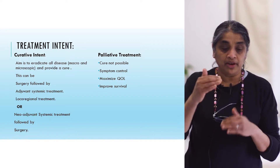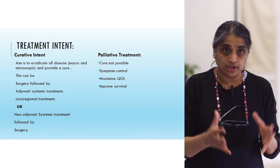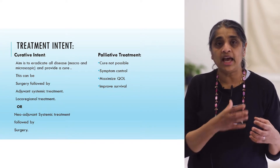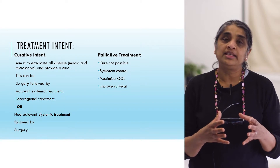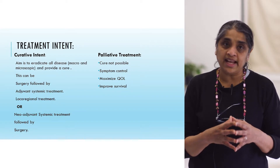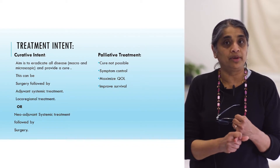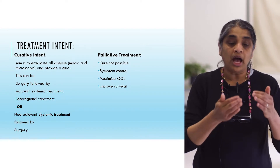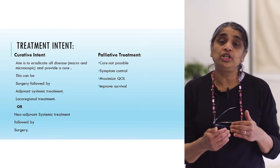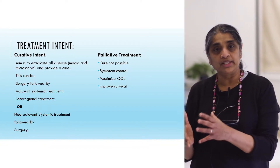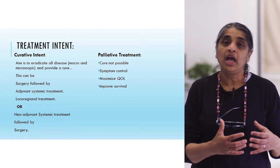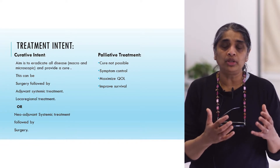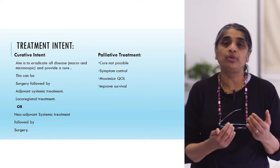For radical treatment there are two approaches. One is surgery followed by adjuvant treatment: surgery removes disease in the breast and axilla, then adjuvant systemic treatment eradicates micrometastatic disease, supplemented by local regional treatment such as radiotherapy. The other is neoadjuvant treatment — giving systemic treatment first to downstage the tumour and then proceeding to surgery for local control. Both aim for cure but differ in the sequencing of treatments.